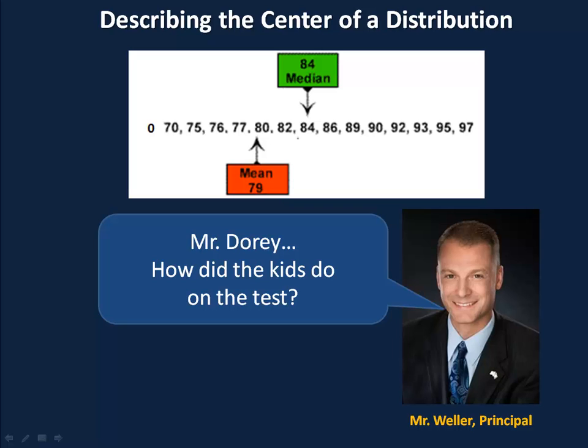The median is 84. The mean is 79. Do we tell him the scores were around 79 or that they were around 84? Take a look at the scores. They start at zero and they go up to 97. Which do you think best describes these test scores? 79 or 84? Write that down off to the side.